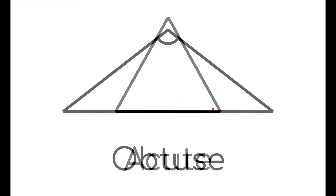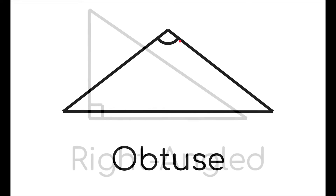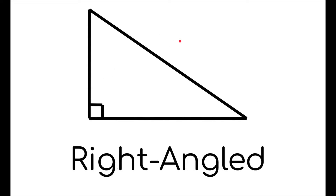An obtuse triangle is a triangle with one angle more than 90 degrees.